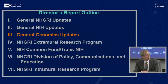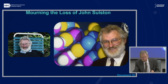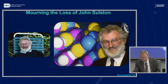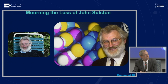Moving on to general genomics updates, starting with some sad notes. The genomics community recently lost a true pioneer and legend: Sir John Sulston, founder of the Wellcome Trust Sanger Institute in the United Kingdom, passed away at the age of 75. John received the Nobel Prize in Physiology or Medicine along with Sidney Brenner and Robert Horvitz for mapping out the cellular development of C. elegans. Of particular relevance to NHGRI, John was a key leader in the Human Genome Project and an outstanding partner in all aspects of this historic effort. He was also a strong leader in advocating for open and rapid data sharing. John will be sorely missed.